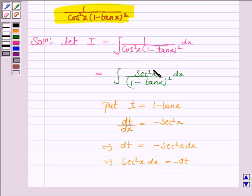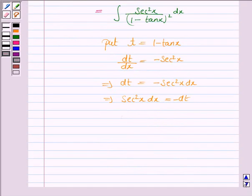Now, secant square x dx is minus dt, and 1 minus tan x is t. So, substitute all these values in the integral. The integral I becomes minus dt upon t to the power 2, which is again equal to minus integral t to the power minus 2 dt.